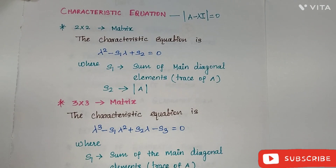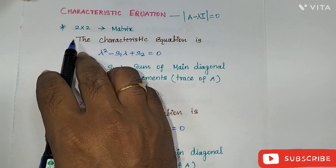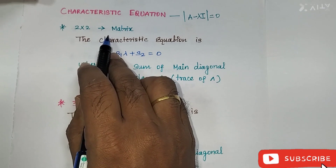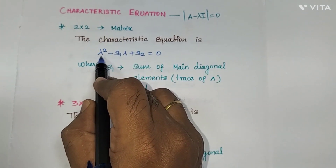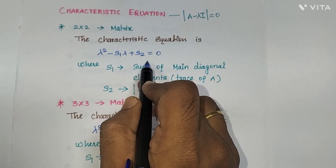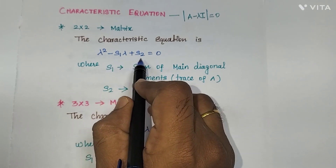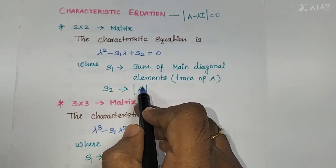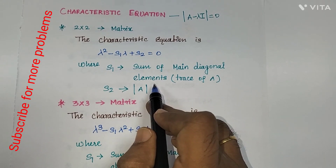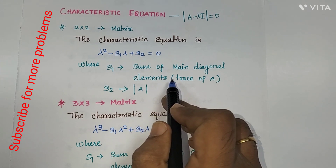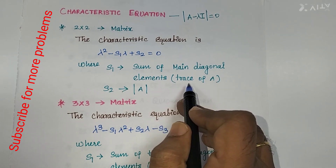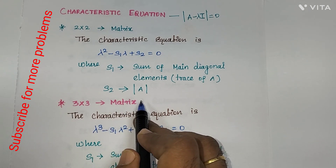Instead of that, we use these two methods for 2×2 matrix and 3×3 matrix. First we see what the 2×2 matrix characteristic equation is. So in a 2×2 matrix, the characteristic equation is: λ² minus S1·λ plus S2 equals zero. We have to find what S1 and S2 are. S1 is the sum of the main diagonal elements, or trace of A. S2 is the determinant of A.